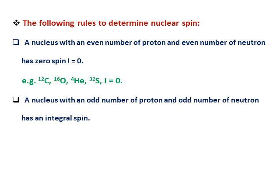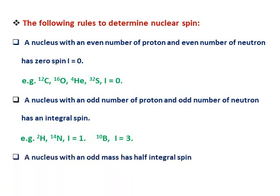Second rule: a nucleus with an odd number of protons and an odd number of neutrons has an integral spin I value. Examples: deuterium and nitrogen have I equal to 1. Third rule: a nucleus with an odd mass number has a half-integral I value. Examples: H-1, carbon-13, fluorine-19, phosphorus-31 all have I equal to 1/2.